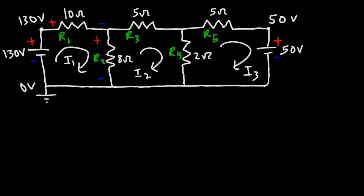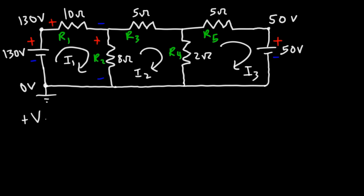This is going to be the positive sign of resistor 1 and the negative sign. This will be the positive sign of resistor 2 and the negative sign, since this is the ground which has the lowest potential. Analyzing the first loop starting from this point: going through the battery is a voltage rise, through resistor 1 is a voltage drop, and through resistor 2 is a voltage drop. So this is the first equation using Kirchhoff's voltage law.